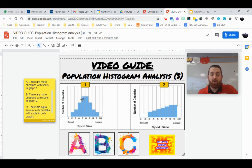A, graph one has more cheetahs with spots. B, graph two has more cheetahs with spots. Or C, they have equal amount of cheetahs with spots.